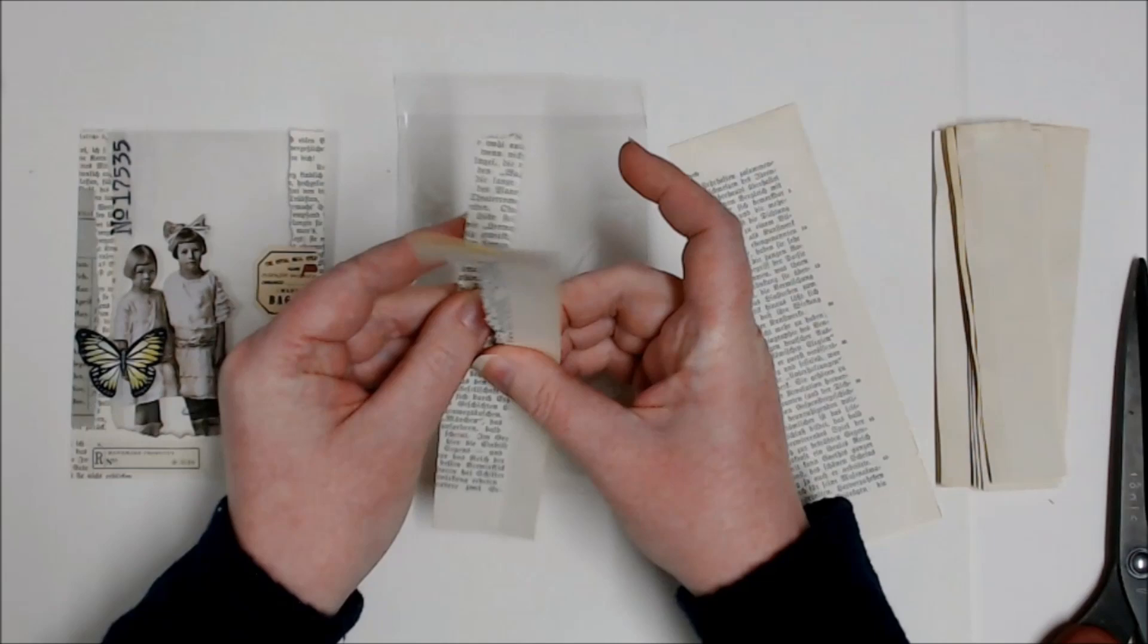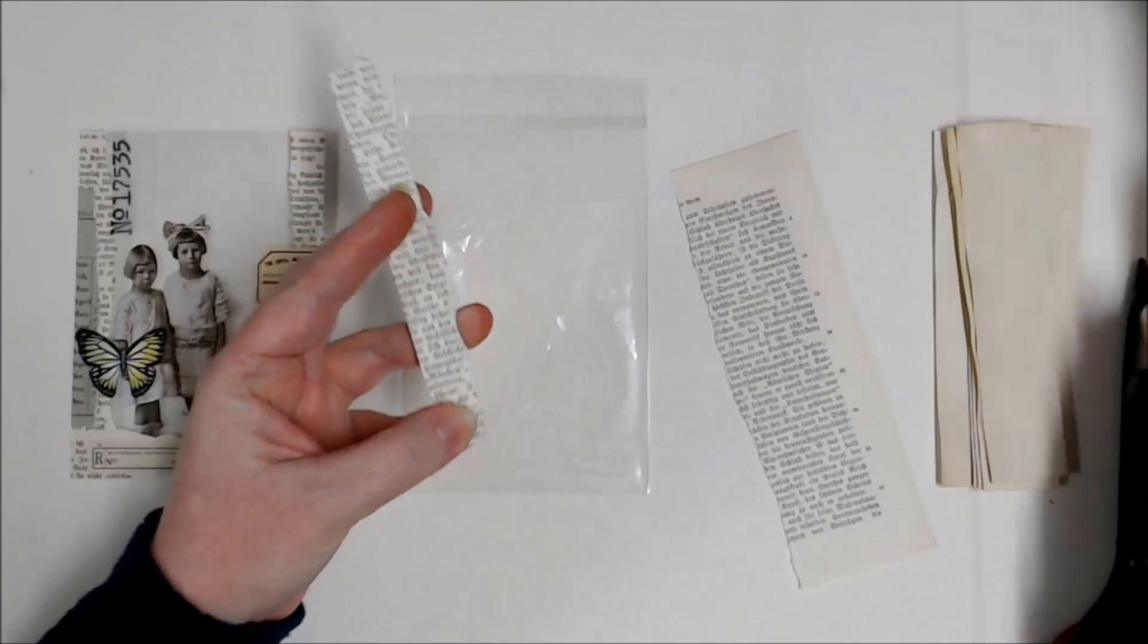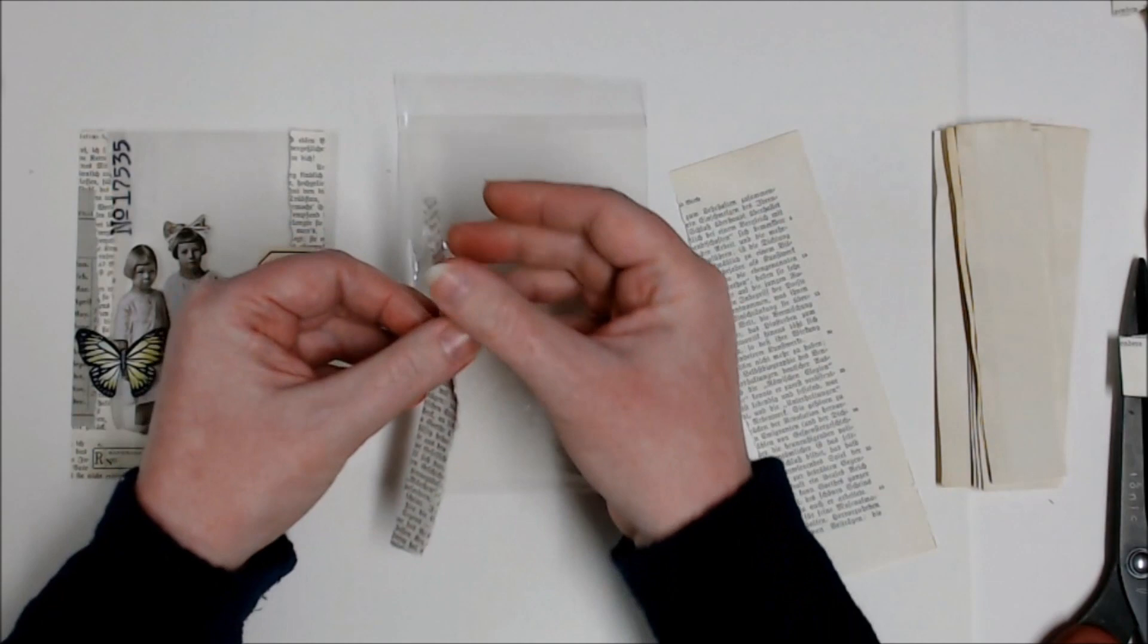So this is the folded crease and by tearing it whilst it's folded, the back and the front are roughly going to be the same shape. It doesn't really matter. I just prefer it that way.